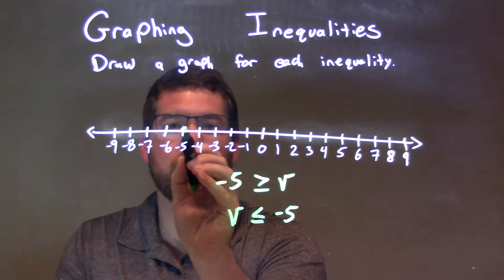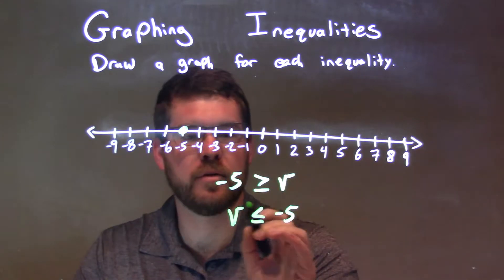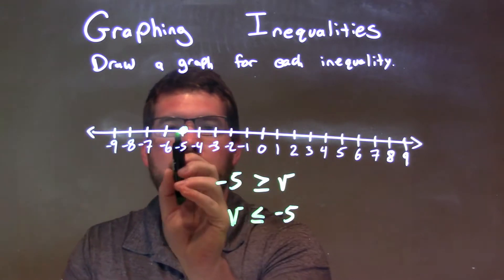We know V can equal it, so we have a closed circle right there at negative 5. Then we shade to the left, because V is less than or equal to negative 5.